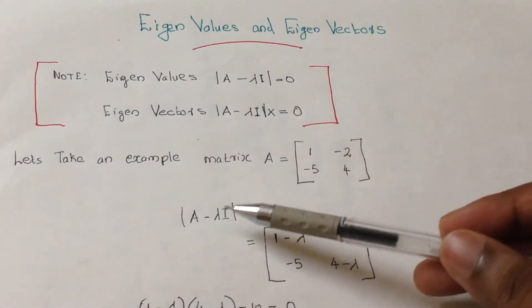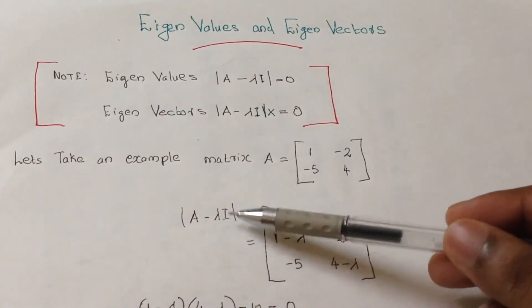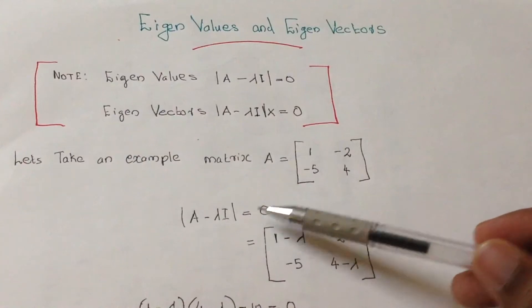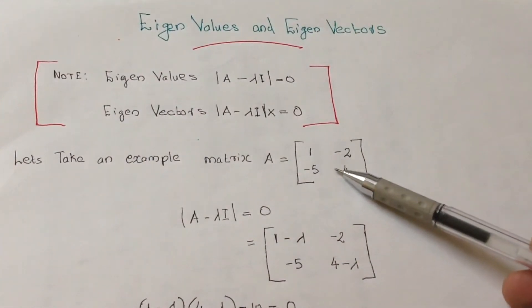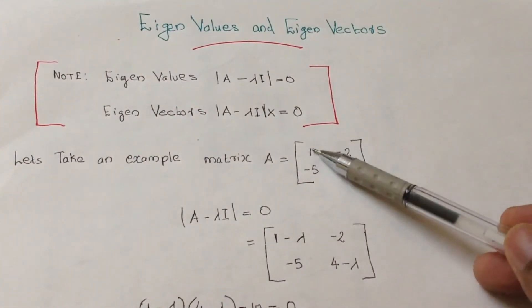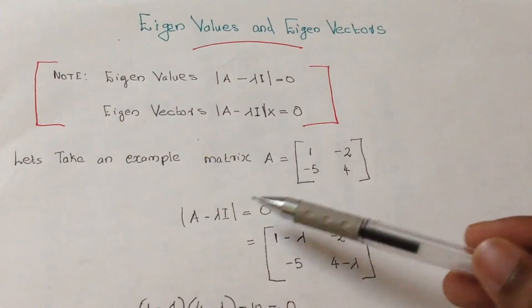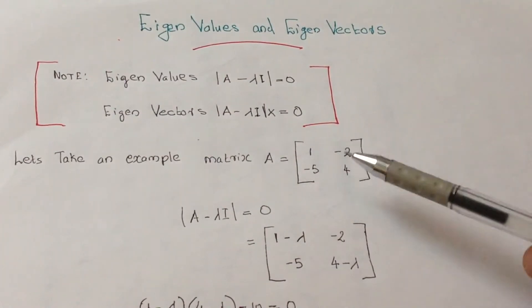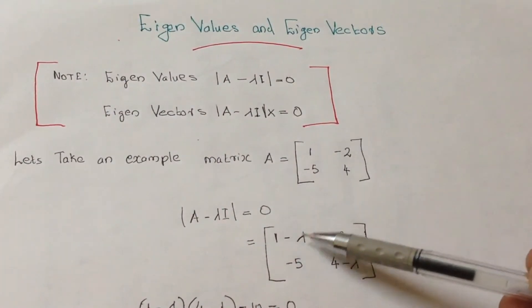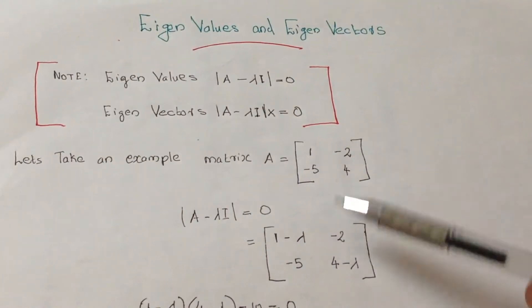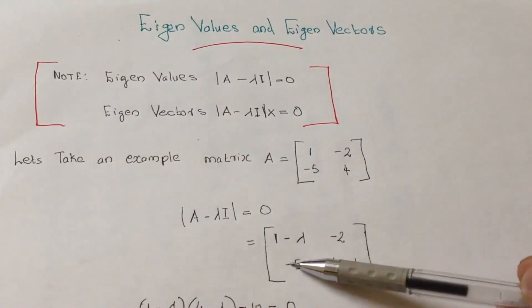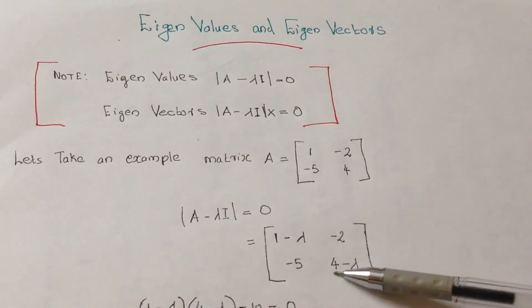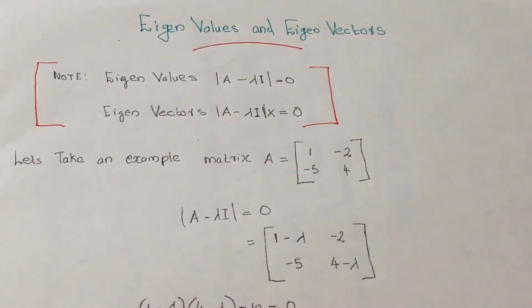For the eigenvalues equation, A minus lambda I equal to 0. We have to subtract the lambda value from the diagonal elements. The diagonal elements here are 1 and 4. So we get 1 minus lambda, minus 2, minus 5, and 4 minus lambda.